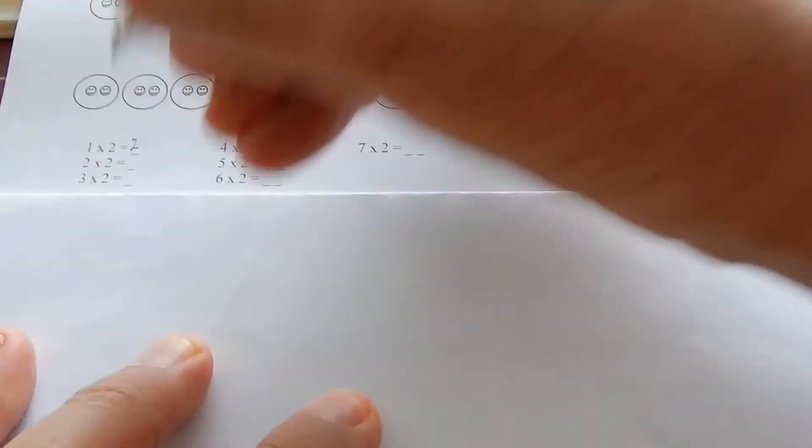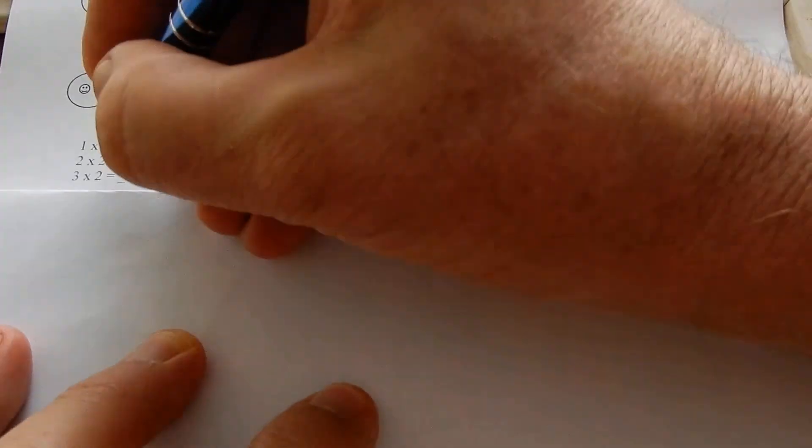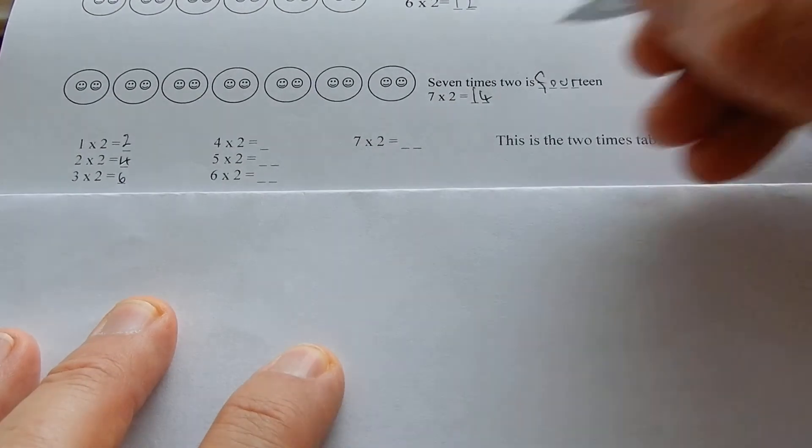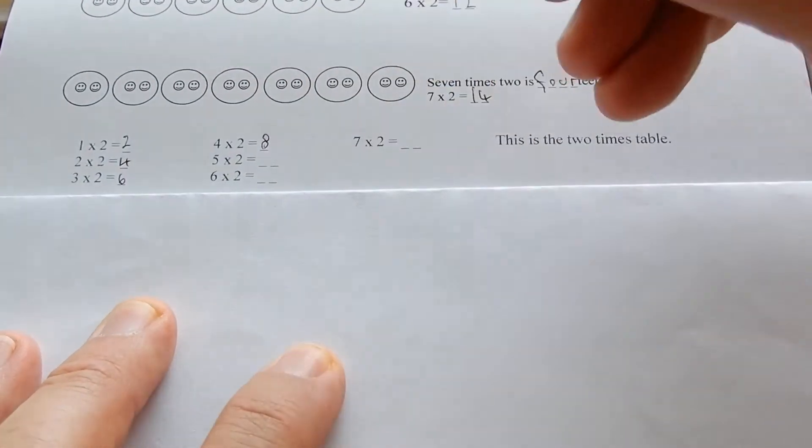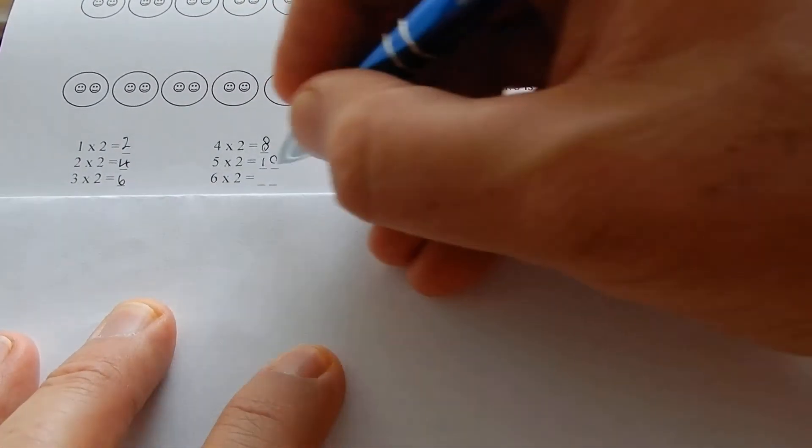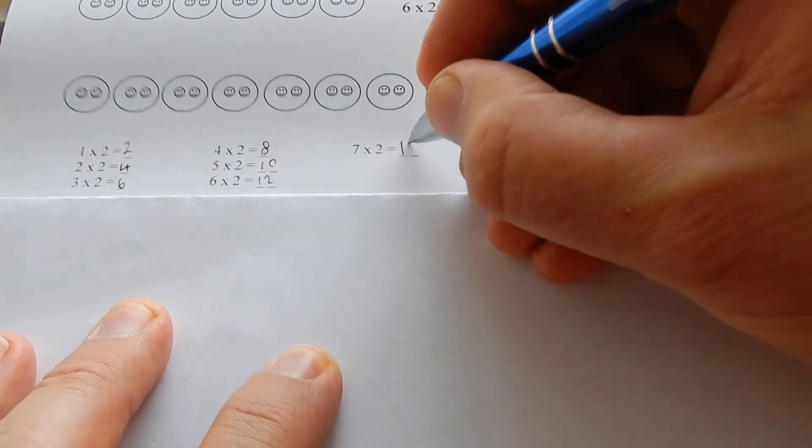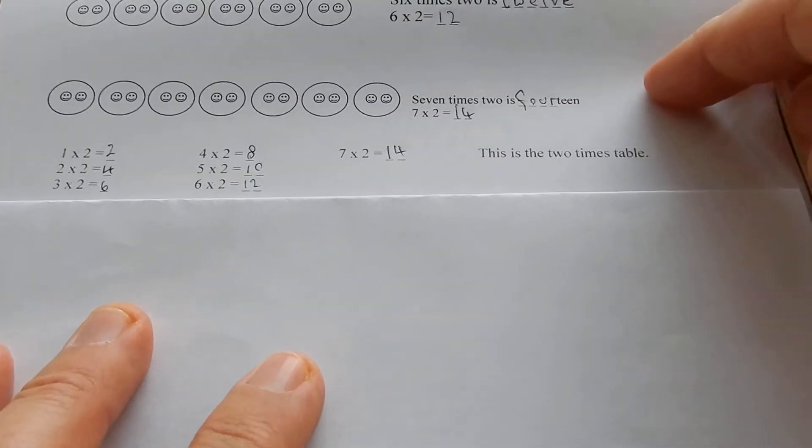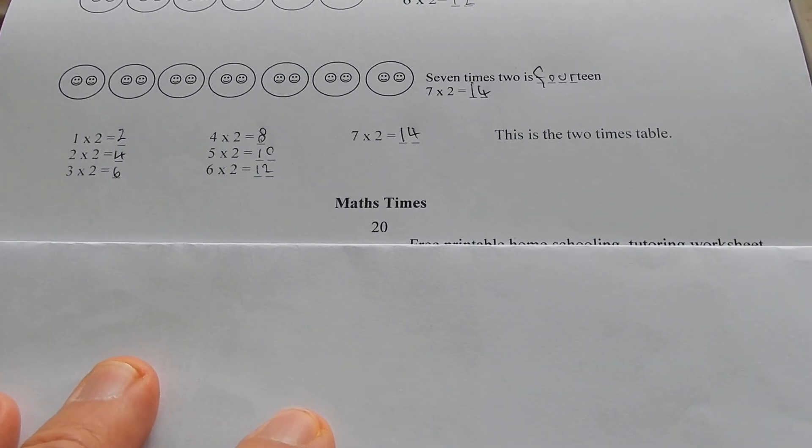One times two is two. Two times two is four. Three times two is six. Four times two is eight. Five times two is ten. Six times two is twelve. Seven times two is fourteen. This is the two times table.